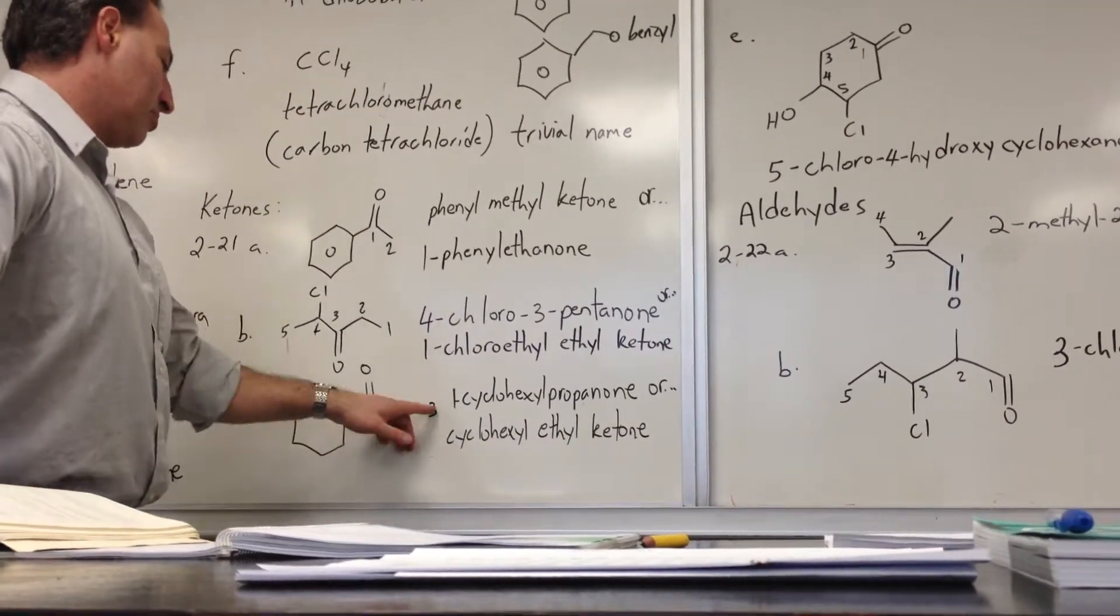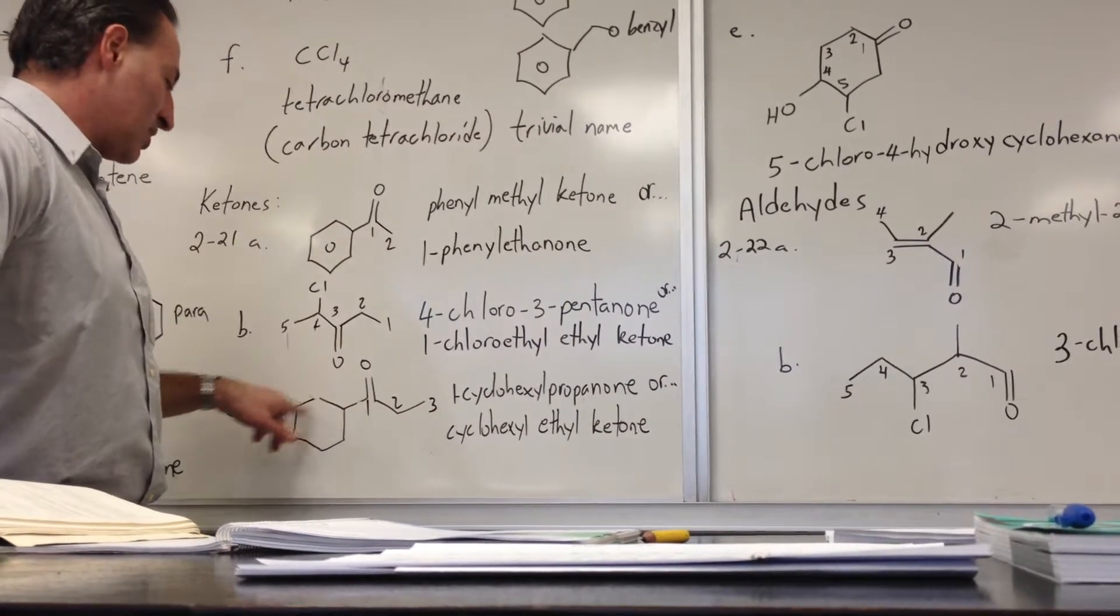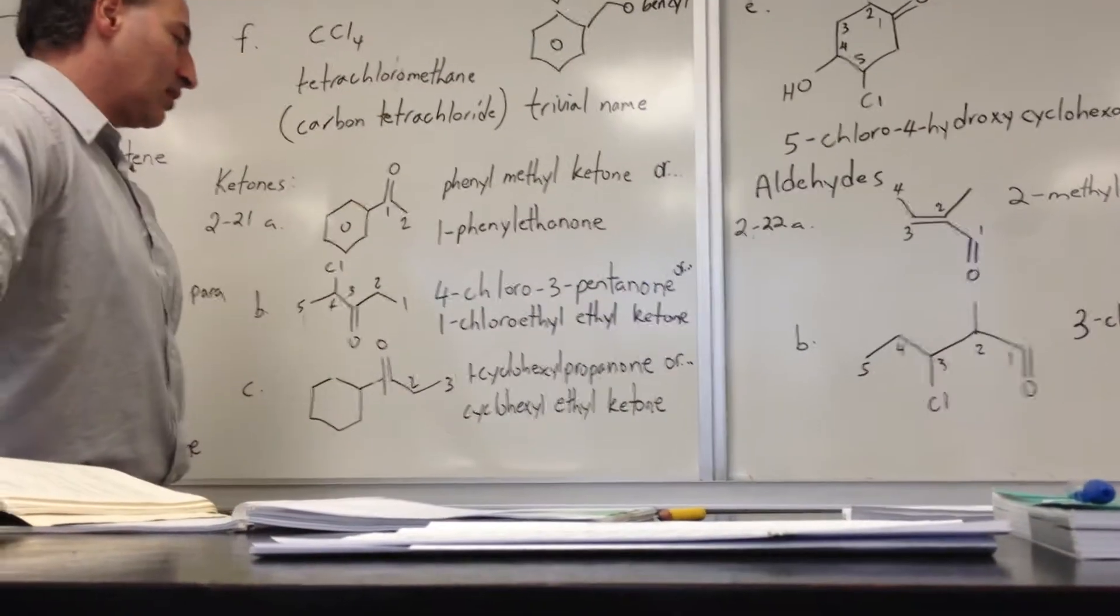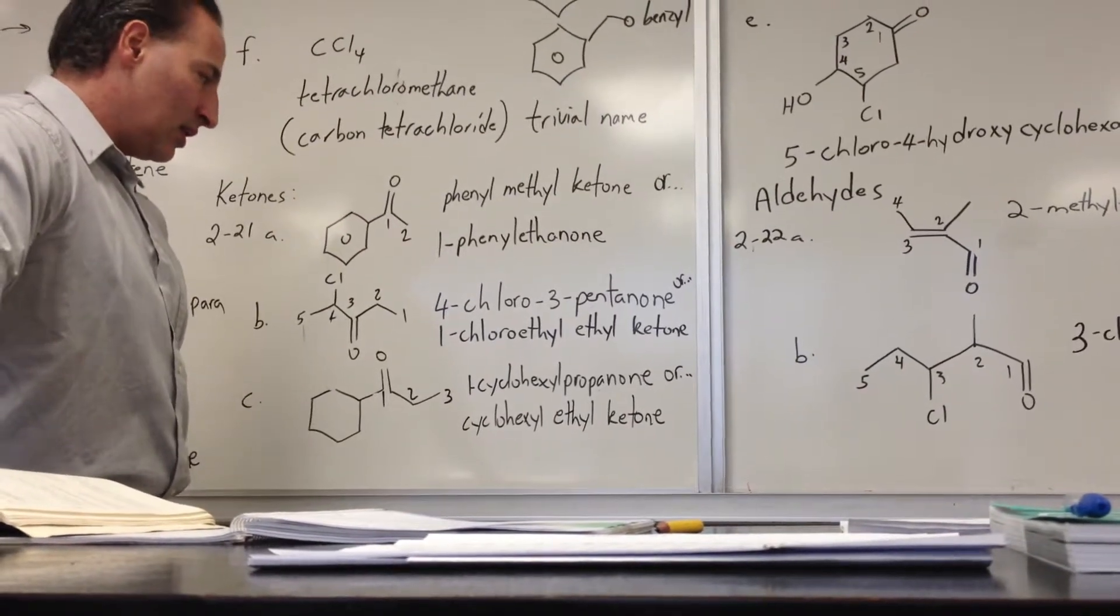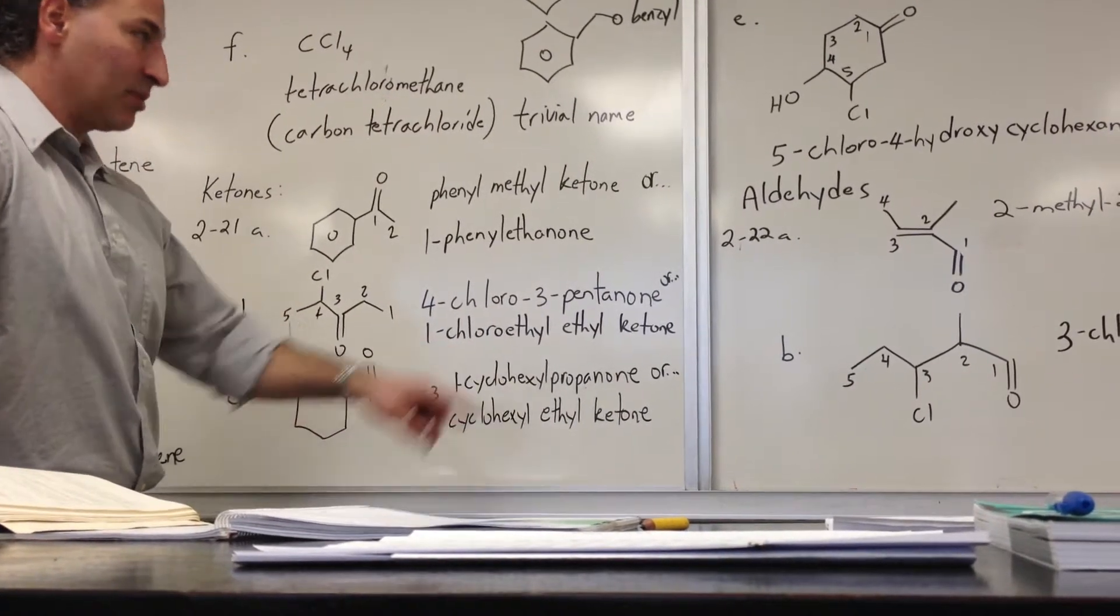21C, we have a propane as the longest chain with a ketone at the first position, and there's a cyclohexyl group attached to the carbonyl, so you could call that 1-cyclohexylpropanone, or you could call it cyclohexyl ethyl ketone, three separate words again.